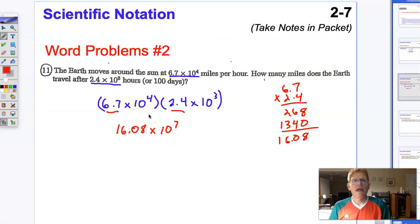Now, am I in scientific notation? I am not. I need to make sure that I move that back to proper scientific notation. So I'm going to move this decimal there. It's going to give me 1.608. And since I'm moving it to the left, I'm going to have to increase my exponent.